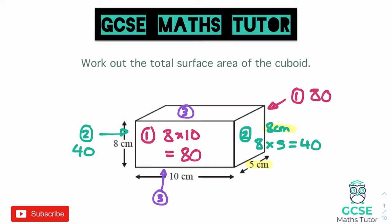For the final face — the rectangle on the top and bottom — we have five and ten as the side lengths. So the area of face number three is five times ten, which equals 50. Again that's the same on the bottom, so both are 50.